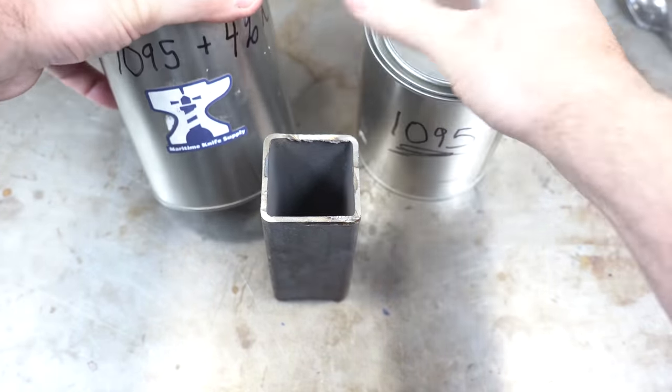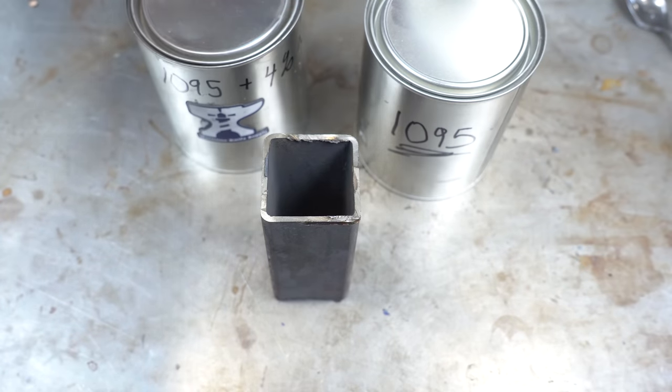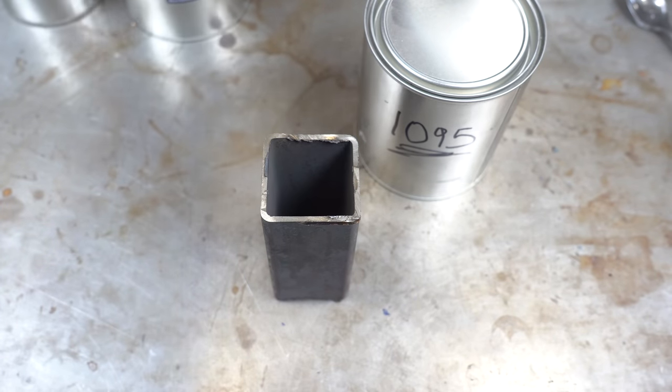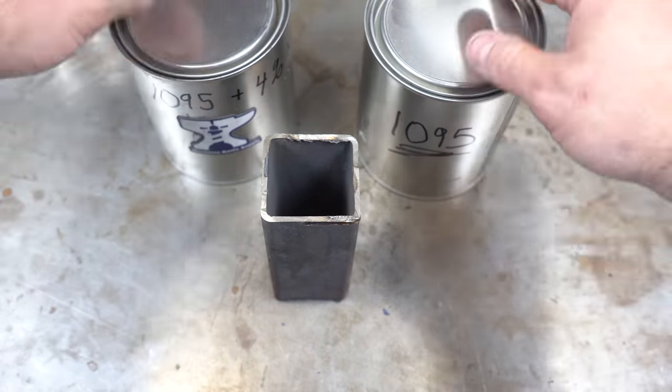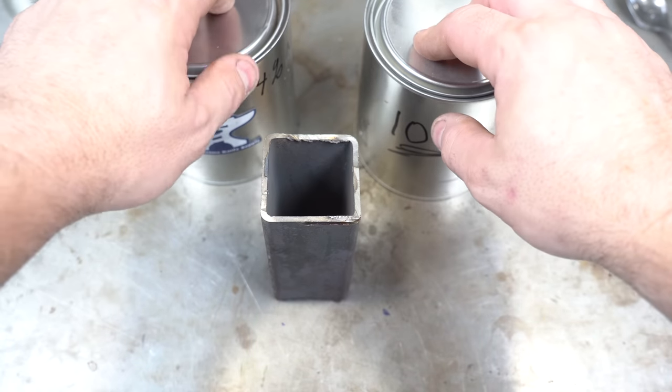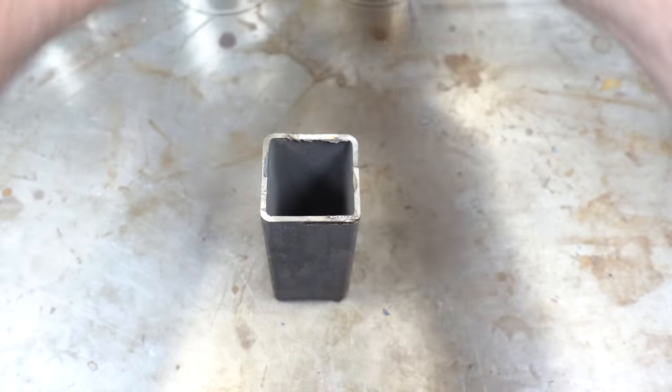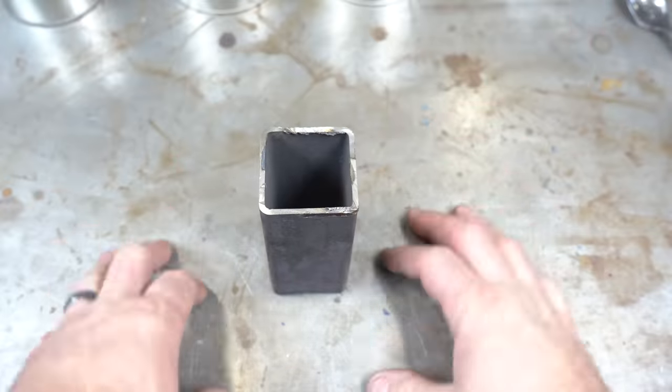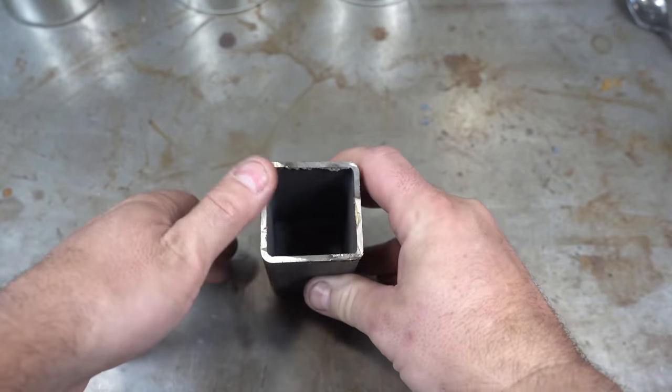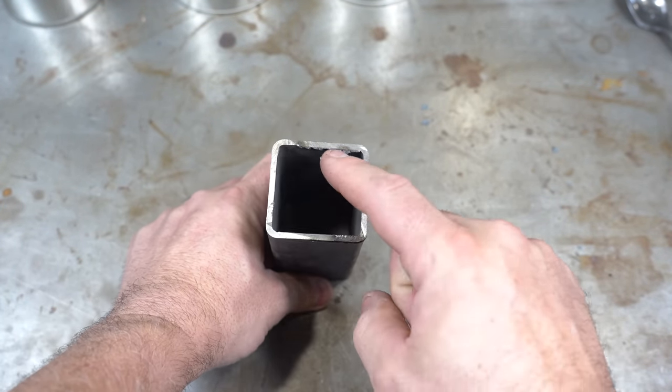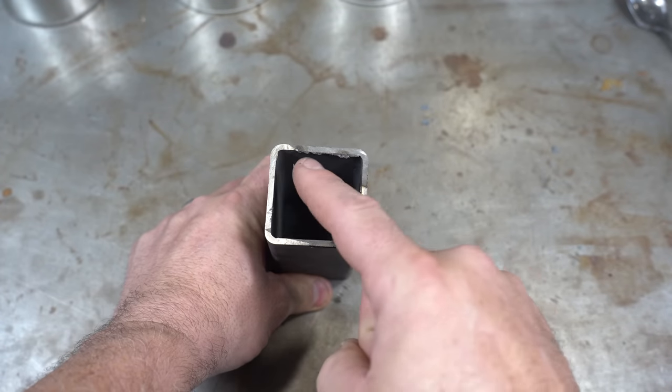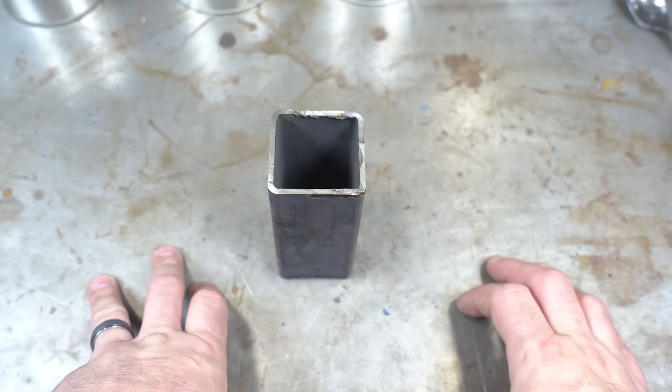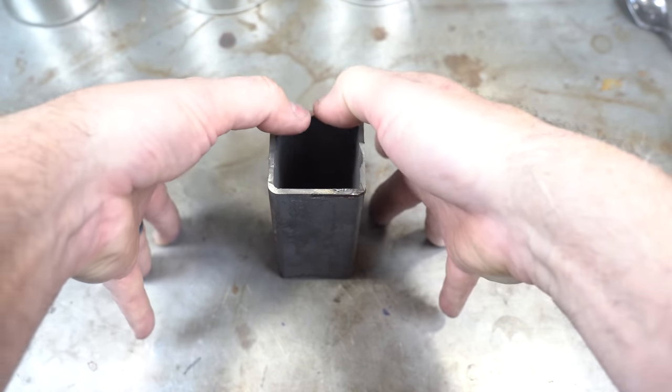This is 1095 and I've added 4% pure nickel, essentially making it very similar to 15N20. You can buy this stuff pre-mixed at Maritime Knife Supply. That is typical canister construction - put stuff in it and fill it. What's starting to become more popular is to somehow create a pattern in the steel, put a mold in here, and then fill that mold with different powders. The problem is, what do you make that little pattern with?